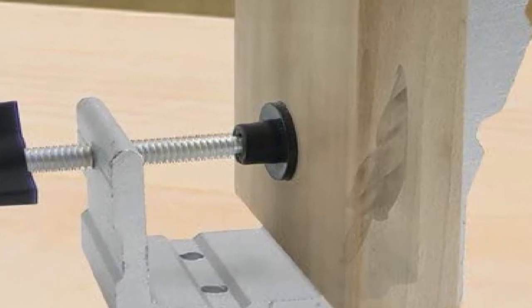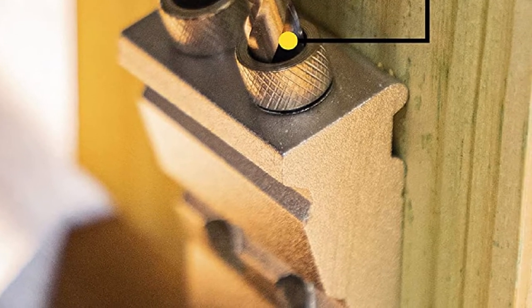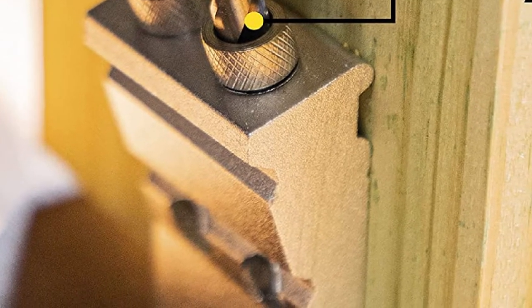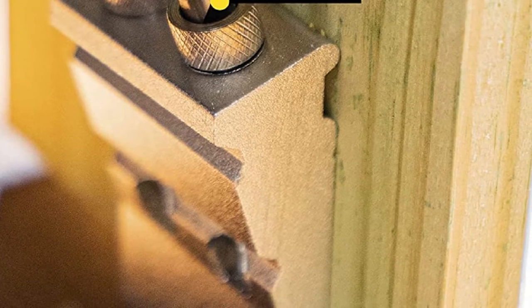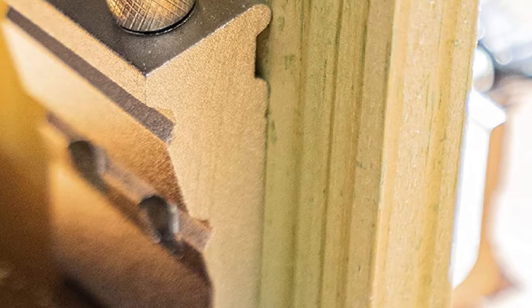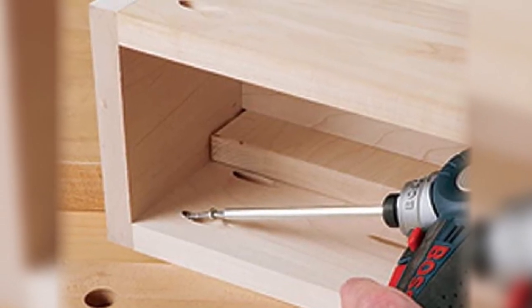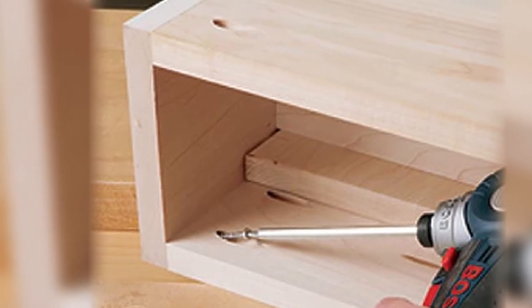The DIY pocket hole jig comes with a lot of packaging including an attached clamp, 3/8-inch steel stop collar, 6-inch hex wrench, square drive bit, 3/8-inch step drill bit, 24 wooden pocket hole plugs, 24 coarse square drive screws, 24 fine square drive screws, and most importantly, a hard carry case built with plastic.